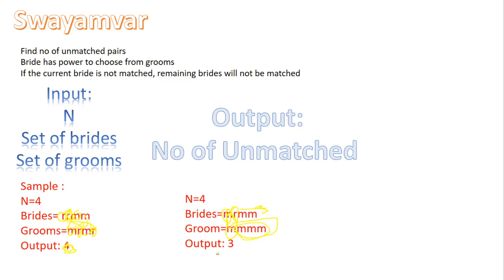My logic for solving this question: I will take the number of brides in a list and the grooms in a list. I take the first bride and check in the grooms list if her choice is found — if yes, I increase the pair count and move to the next bride. If her choice is found again, I increase the count and move on. If I did not find any of her choice in the grooms list, I simply exit the loop and print the remaining number of people.